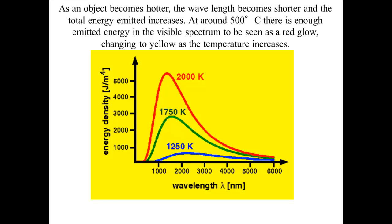Note on the diagram below that as an object becomes hotter, the peak becomes higher, meaning more energy is emitted, and the wavelength of the peak becomes shorter and its energy increases. At around 500 degrees Celsius, there is enough emitted energy in the visible spectrum to be seen as a red glow, changing to yellow as the temperature increases.